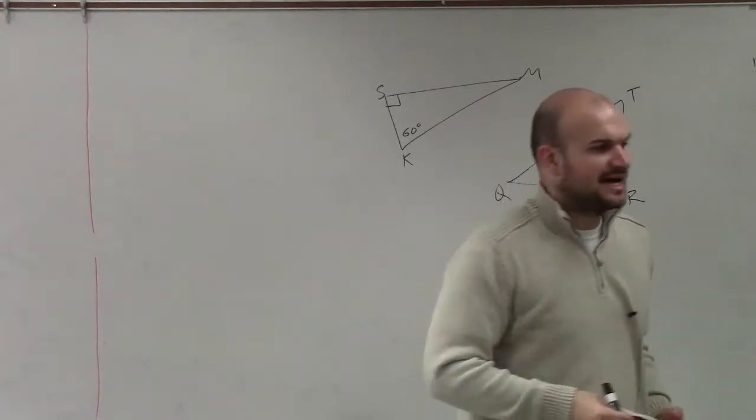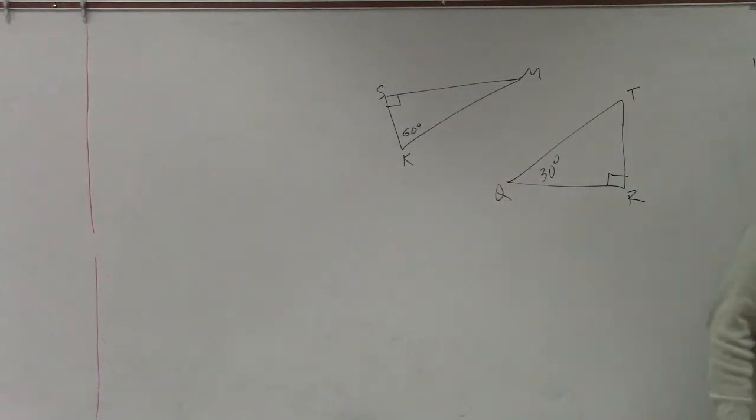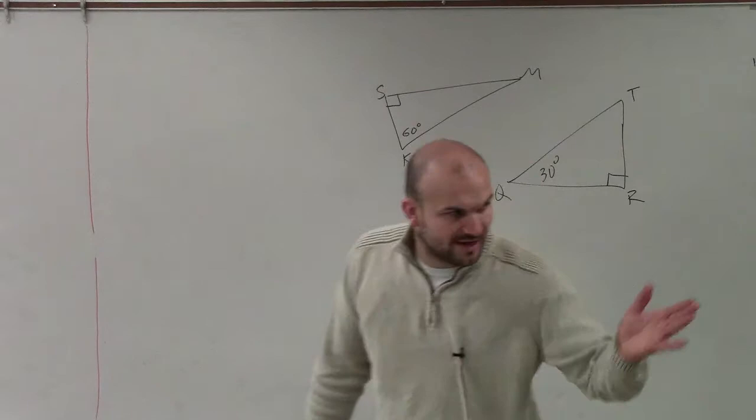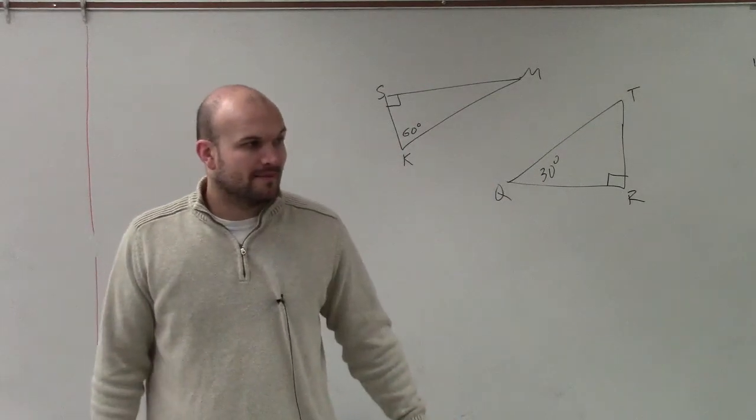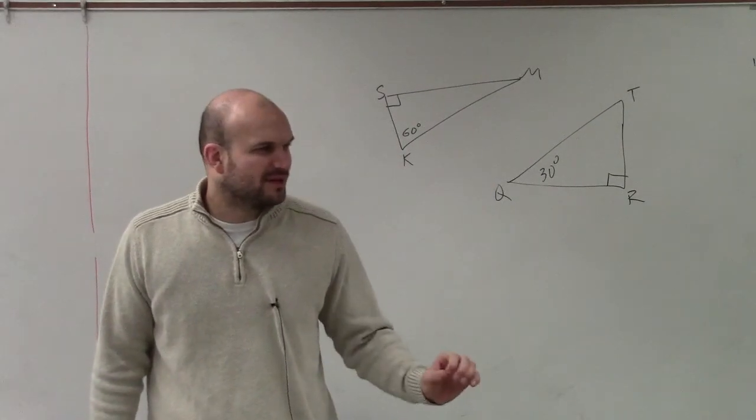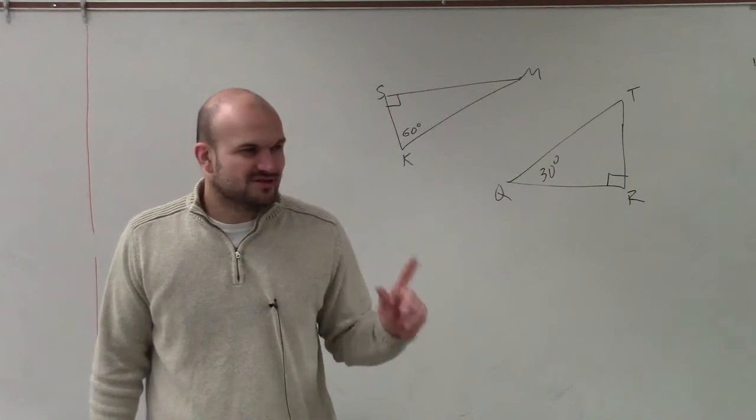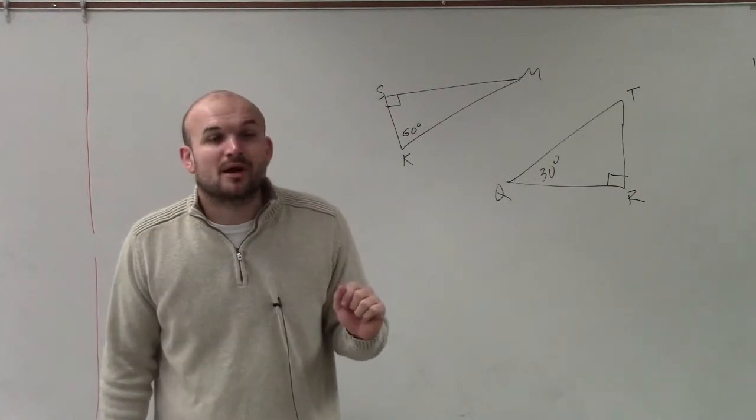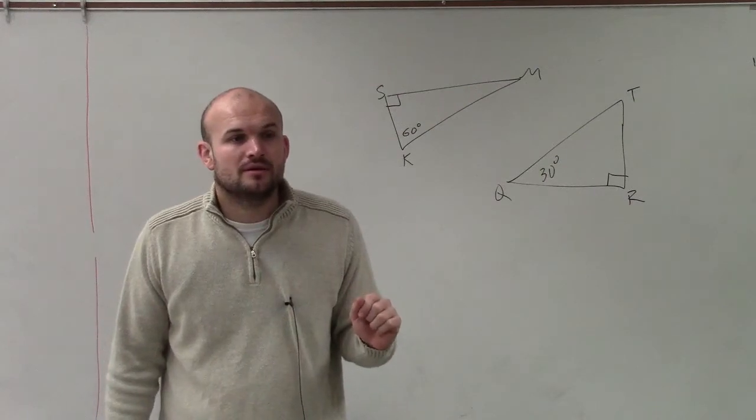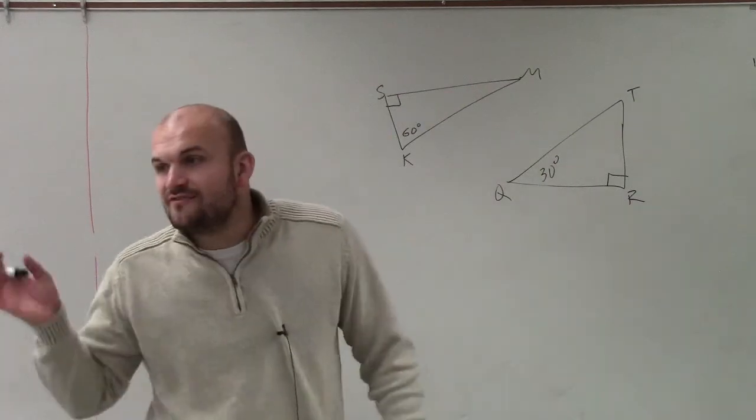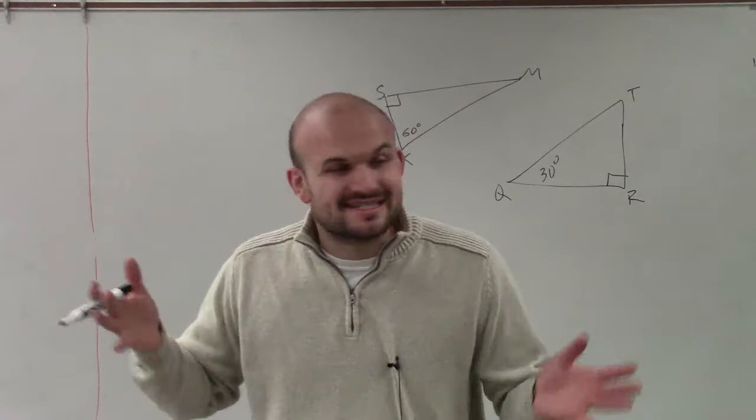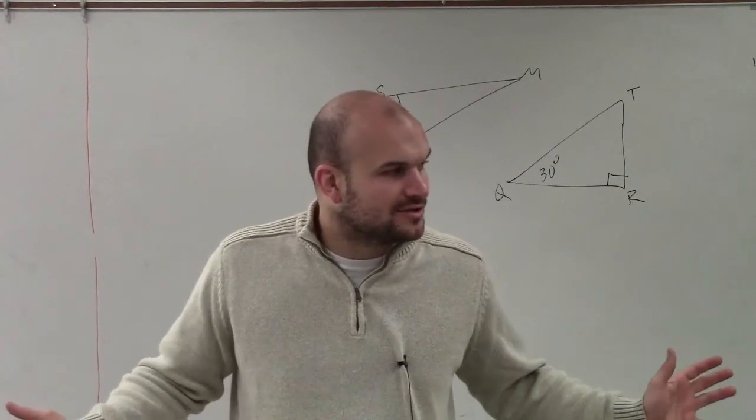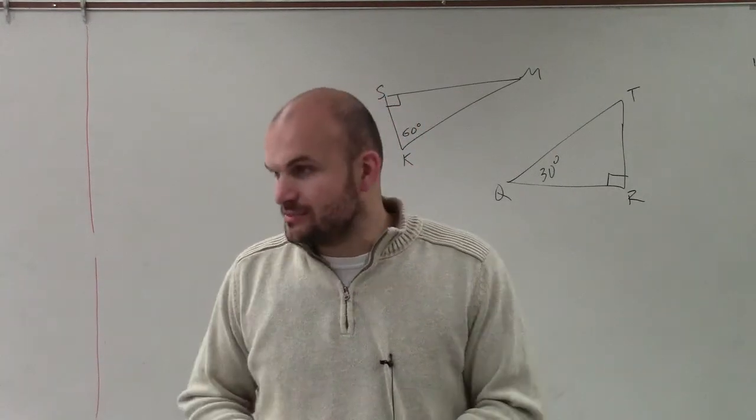Now, if you guys remember last class period, there's three different ways that we could prove similarity between two triangles. Devin, do you remember one? Do you remember one way we could prove similarity? Maybe Mark can help you out. Mark, would you remember the first one? Angle, angle. That's right. If we can find two angles that are exactly the same between two triangles, then we can show that they are similar to each other.